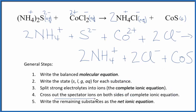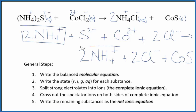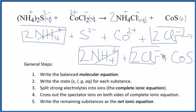Now we can cross out spectator ions — they're on both sides. We have 2 ammonium ions in the reactants and 2 in the products, so we can get rid of those. We have 2 chloride ions, and then here again in the products 2 chloride ions — get rid of those. What's left is the net ionic equation for ammonium sulfide plus cobalt 2 chloride. I'll clean this up and write the states in, and we'll have our net ionic equation.